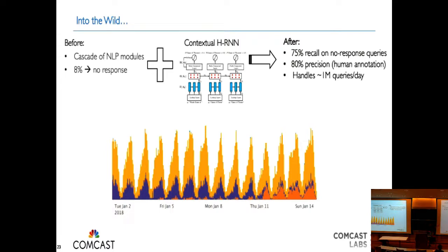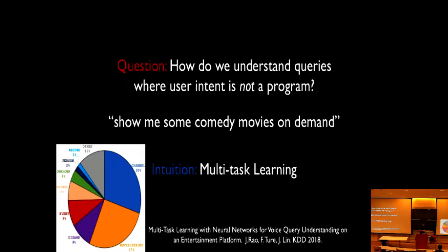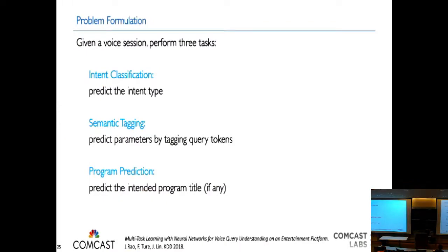Now we could predict programs. But our data analysis showed people use this voice interface for many different things — looking for channels, movies, browsing the catalog, looking for people, setting up recordings, checking weather, and many other features. The idea was to use multitask learning and split the problem into different pieces, solving them in conjunction to get a more structured output. We decided to break this into three tasks: predicting the intent type, predicting the parameters for each intent type by doing tagging on query tokens, and predicting the program title as before.